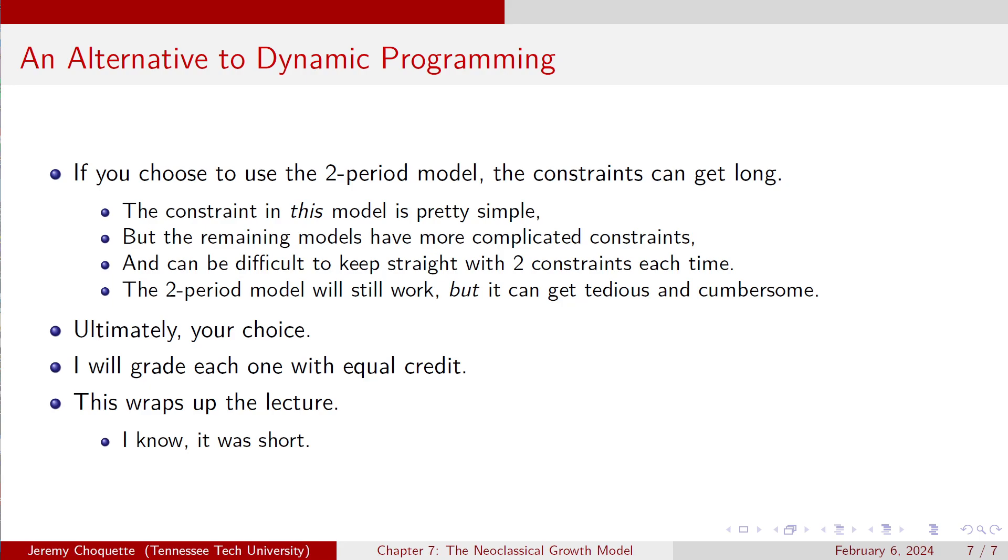So if you choose the two-period model, yeah, the constraints can get a little long. The constraint here was simple. It wasn't that bad. The remaining models have constraints that get a little bit more complicated. So, it can be a little difficult to keep it straight with, like, two constraints each time. But it still works. It can just get a little tedious and cumbersome. End of the day, your choice.